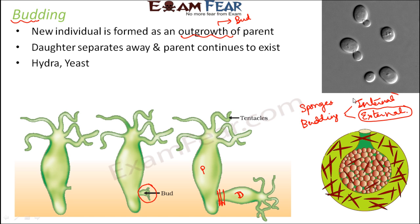In internal budding, small structures called gemmules are formed inside the organism. Each of these gemmules is capable of giving rise to a new organism, and these gemmules are then released from inside and finally give rise to new sponges.